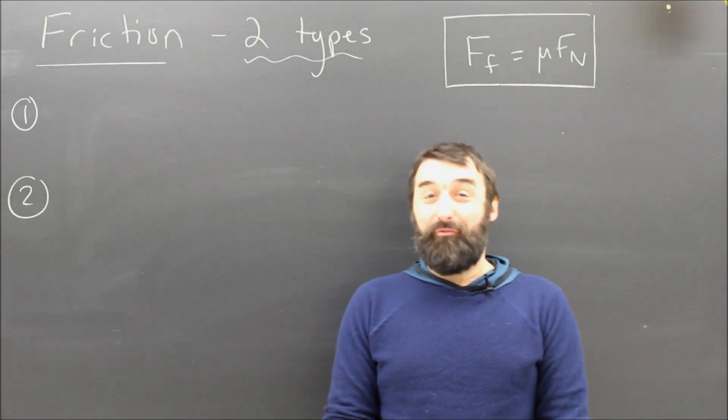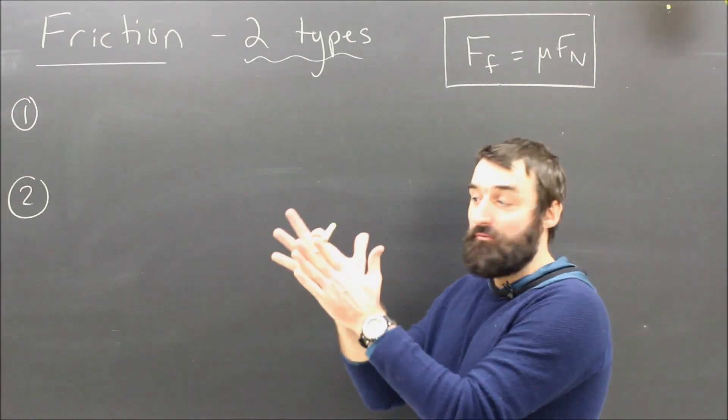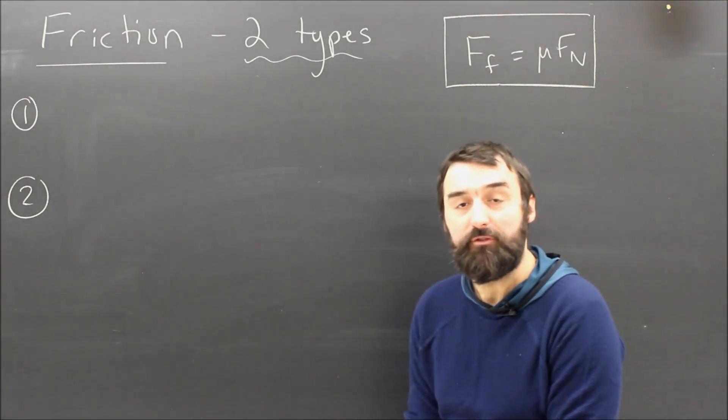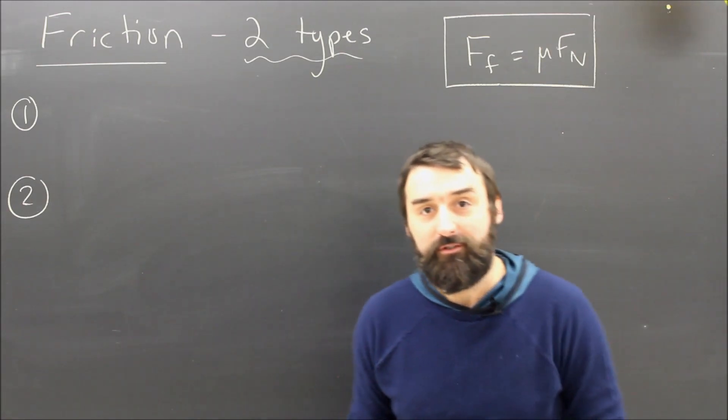Let's learn a little bit more about friction. We understand now that it fights slippage. It tries to prevent the relative velocity of two surfaces. We also know the formula is mu Fn, the coefficient of friction times the normal force.